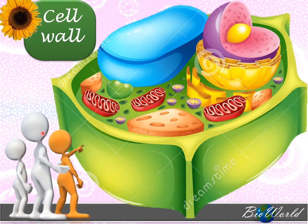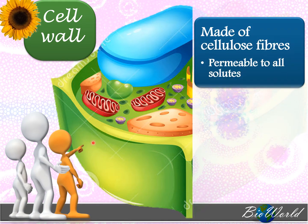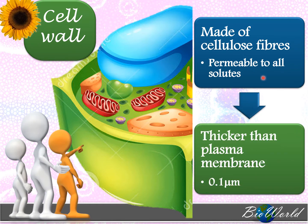The first cellular component is the cell wall. It is the outermost layer of the plant cell and is not present in animal cells. The cell wall is made up of cellulose fibers; therefore, it is permeable to all solutes. The cell wall is also thicker than the plasma membrane, with a width of 0.1 micrometers.